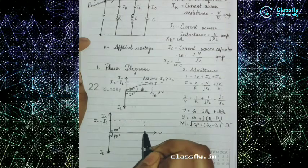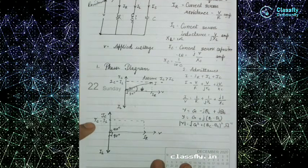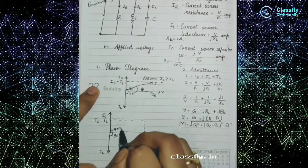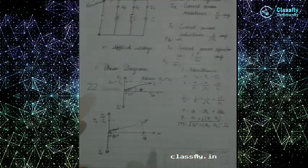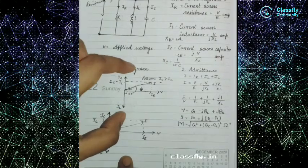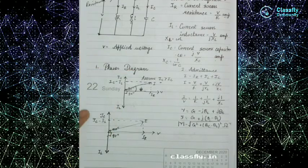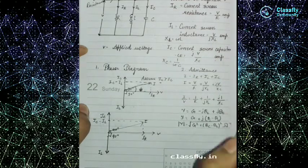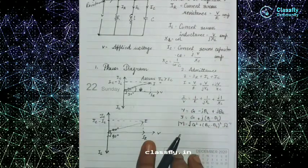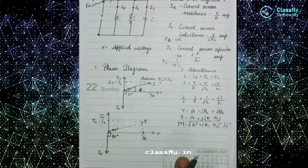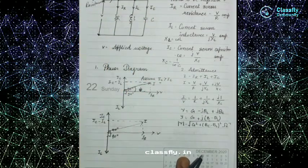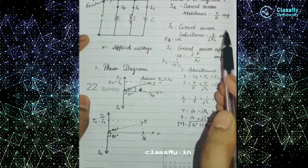We draw a parallel imaginary line for IR and a parallel imaginary line for IC minus IL. Wherever both imaginary lines intersect will be our resultant. Now for the admittance, the total current is I = IR + IL + IC — the combination of the resistance current, inductance current, and capacitance current.